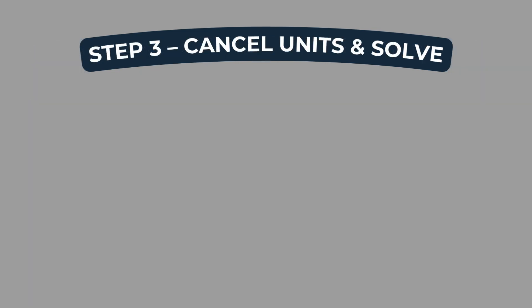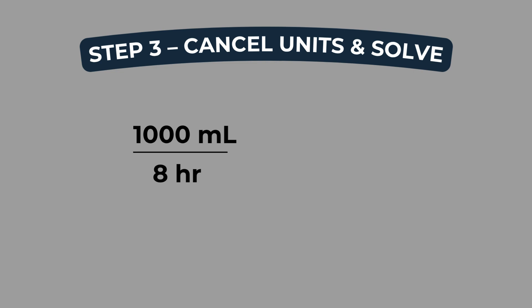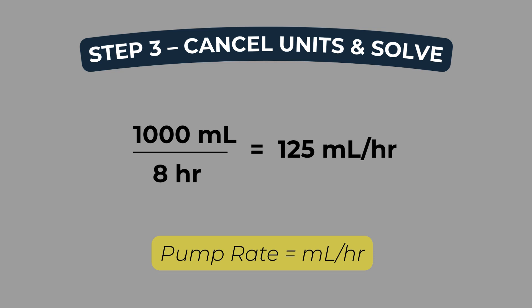So let's go ahead and solve. We start with what we know: one thousand milliliters over eight hours. There's nothing to cancel here because we're already solving for milliliters per hour, which is our target unit. So we just divide — one thousand divided by eight equals one hundred and twenty-five. The pump should be set to infuse at 125 milliliters per hour.